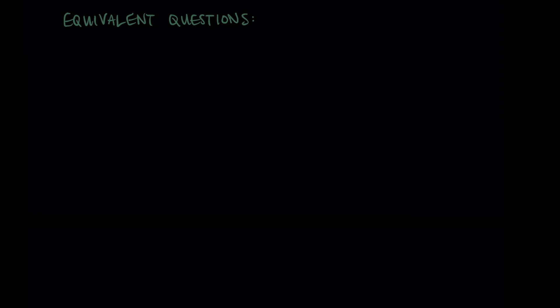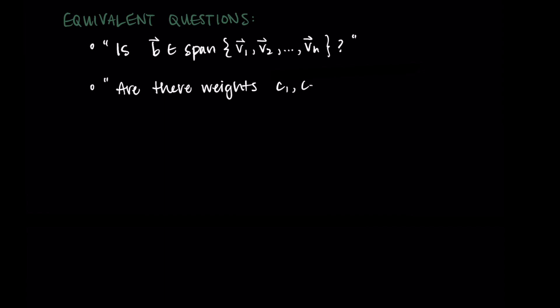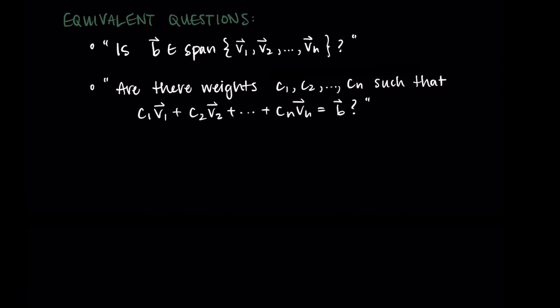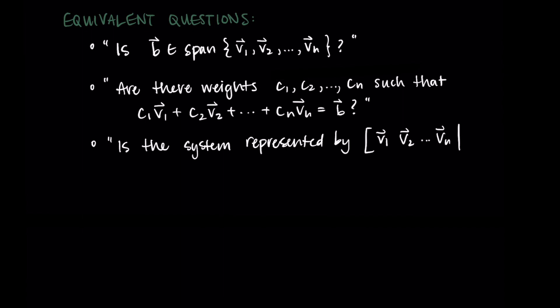We have these equivalent questions that all mean the same thing. We could ask: is the vector b in the span of the vectors v1 through vn? This is equivalent to asking: are there weights c1 through cn such that c1·v1 plus c2·v2, all the way to cn·vn, equals b? Equivalently, is the system represented by the augmented matrix with columns v1 through vn and vector b consistent? To determine if a vector is in the span of another set, we look at the augmented matrix and decide if it's consistent through row reduction.